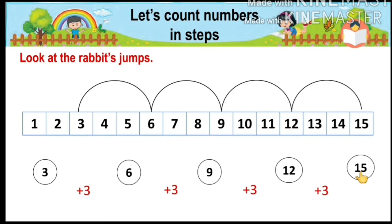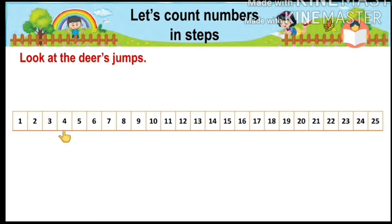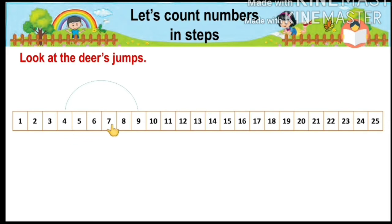All these numbers are in steps of number three. Now look at the deer's jumps. The deer starts jumping from number four and jumps to the next number, nine. We count one, two, three, four, and five steps forward.